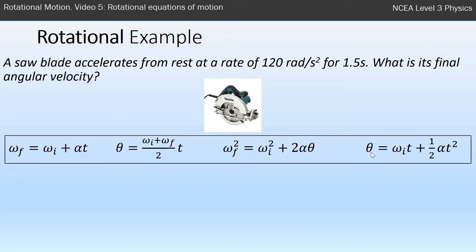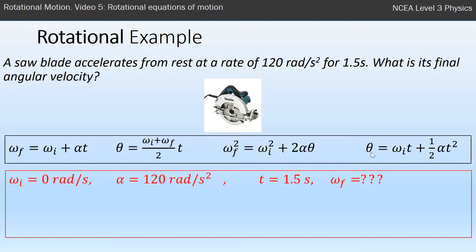Same process as before—I write down what I have. My initial angular velocity is zero because it accelerated from rest. Angular acceleration was 120 radians per second squared. Time was 1.5 seconds, and we want to find final angular velocity.